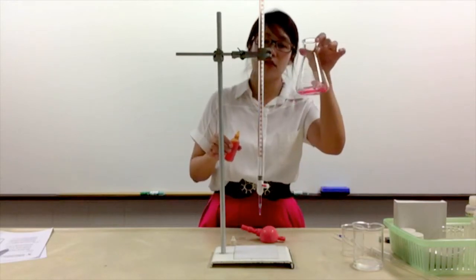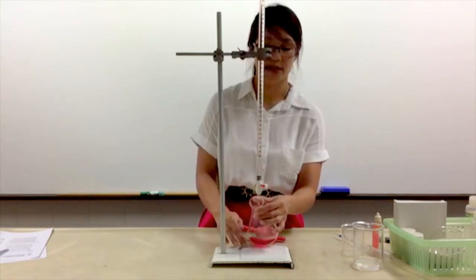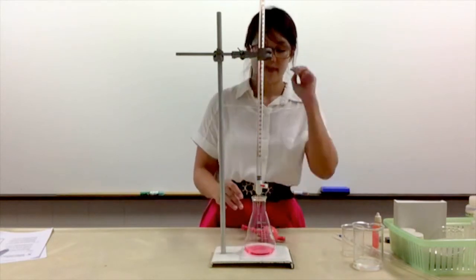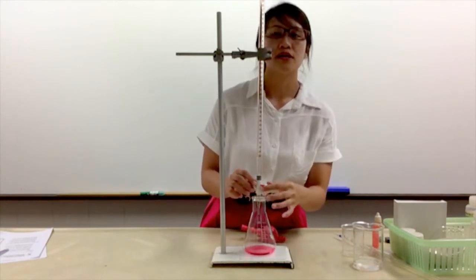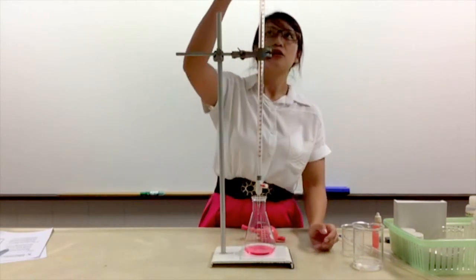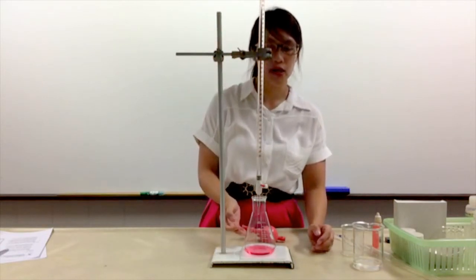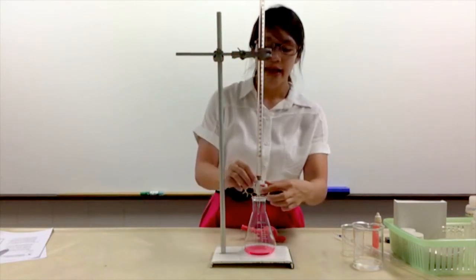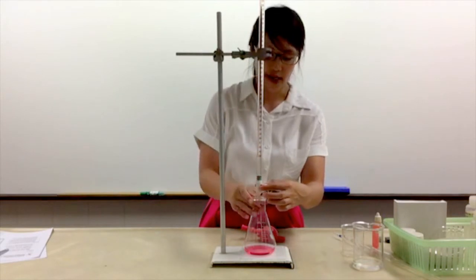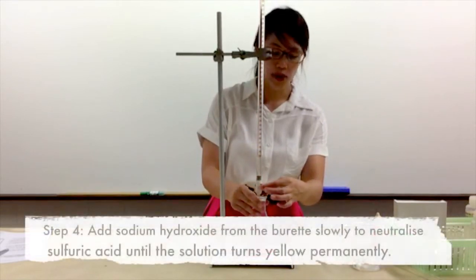Next, place your conical flask below the burette. Now you will start the neutralization reaction. Once you open the tap, your alkaline will start to move downwards and into the conical flask, and the acid and alkaline will start reacting. You need to do this slowly.